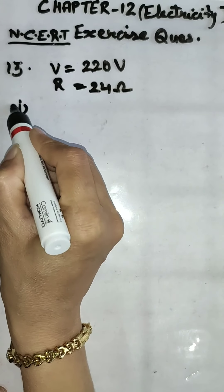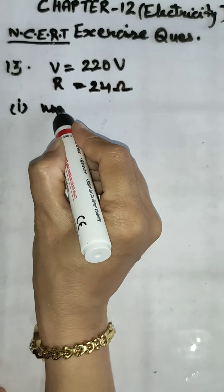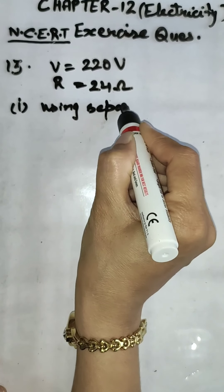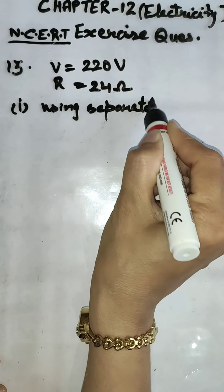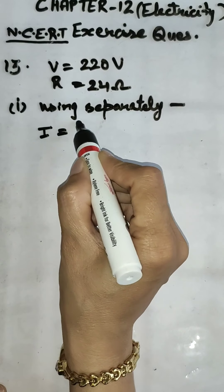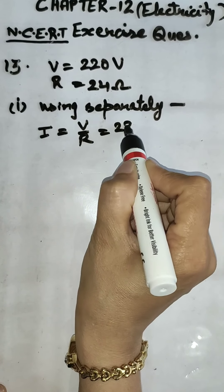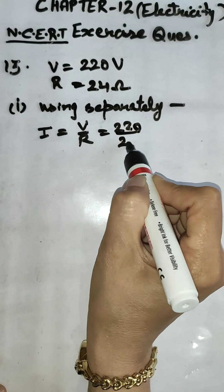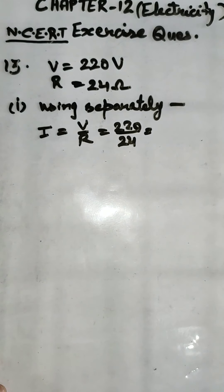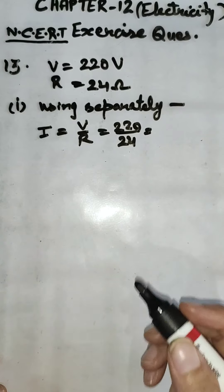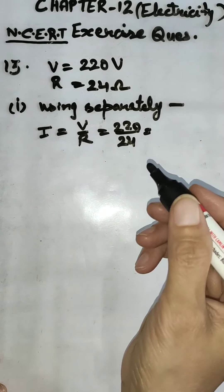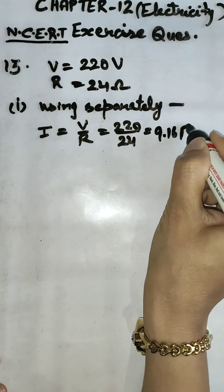First case using single or separately. In separately we have to find current I is equal to V by R. So it is 220 by 24. We will solve it and we will get the value of current as 9.16 ampere.